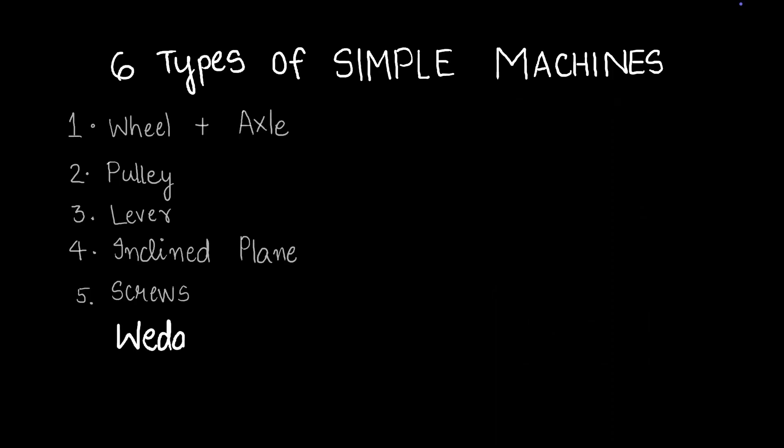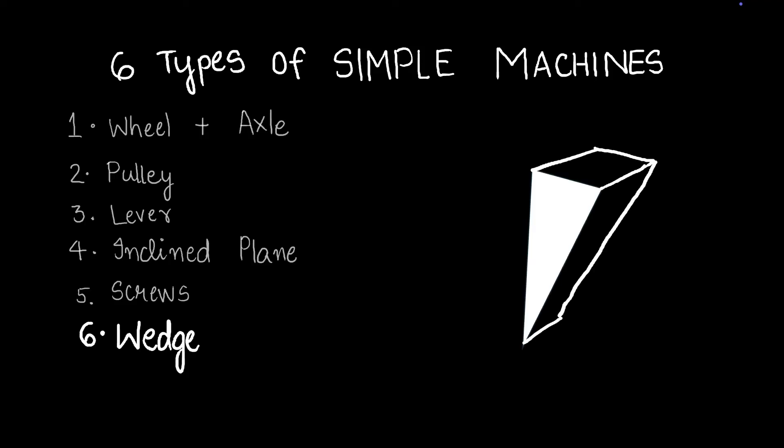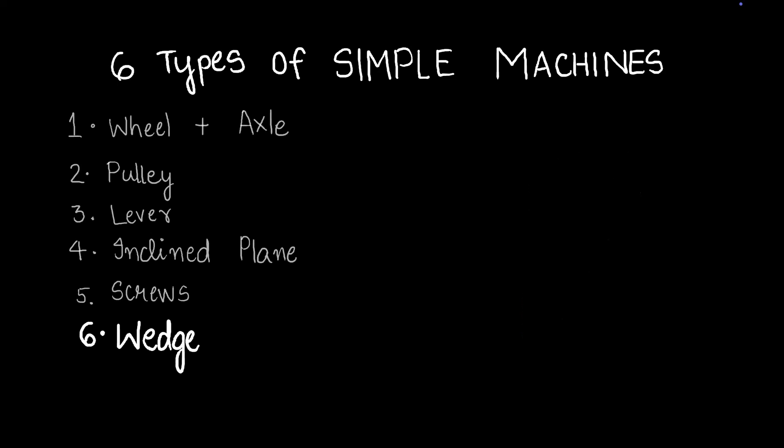Next we've got wedges. A wedge is basically a particular shape. Let me put it up on the screen. This basically is a wedge. It's a three-dimensional triangle kind of thing that is stretched. And that basically is a wedge. An example of a wedge is an axe.